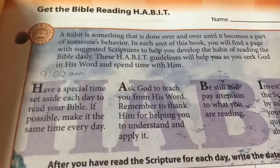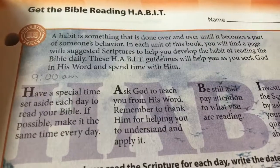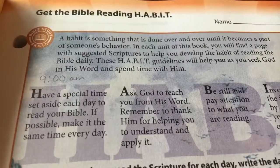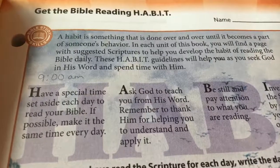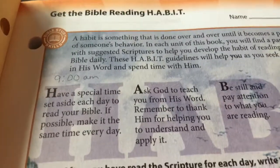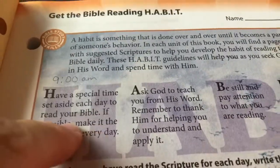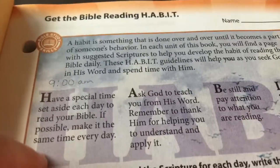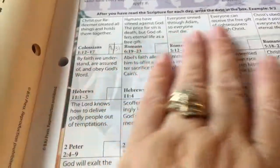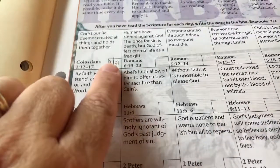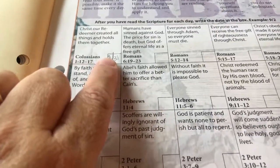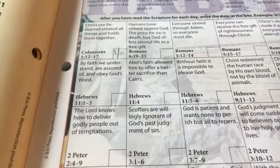They do have perforated edges so you can take the pages out if you want and put them in a big notebook. This was the first lesson we did and it talked about how a habit is something that you have to do over and over. I've heard that you have to do it like 21 times in a row for it to become an automatic habit. Well, we decided that between eight and nine — by nine o'clock — he's got to have his quiet time done.